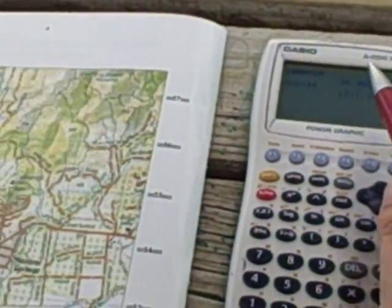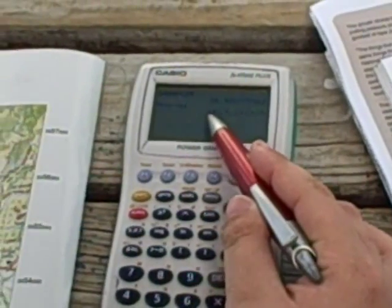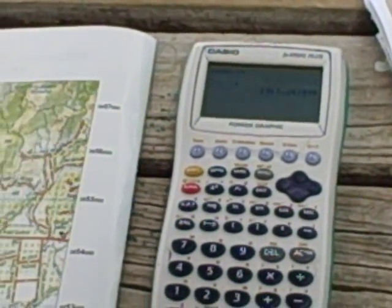So as you can see, our length, the distance between those two points, is 1517 metres.